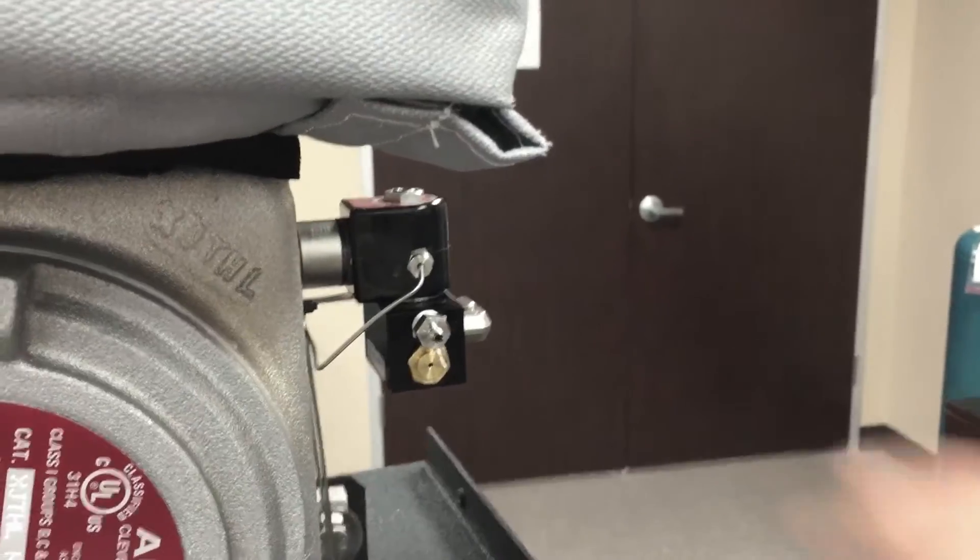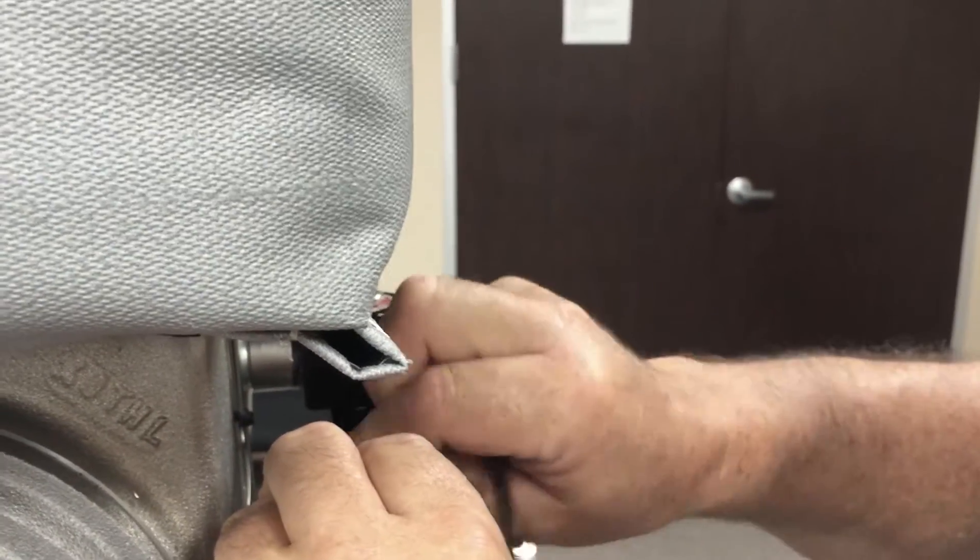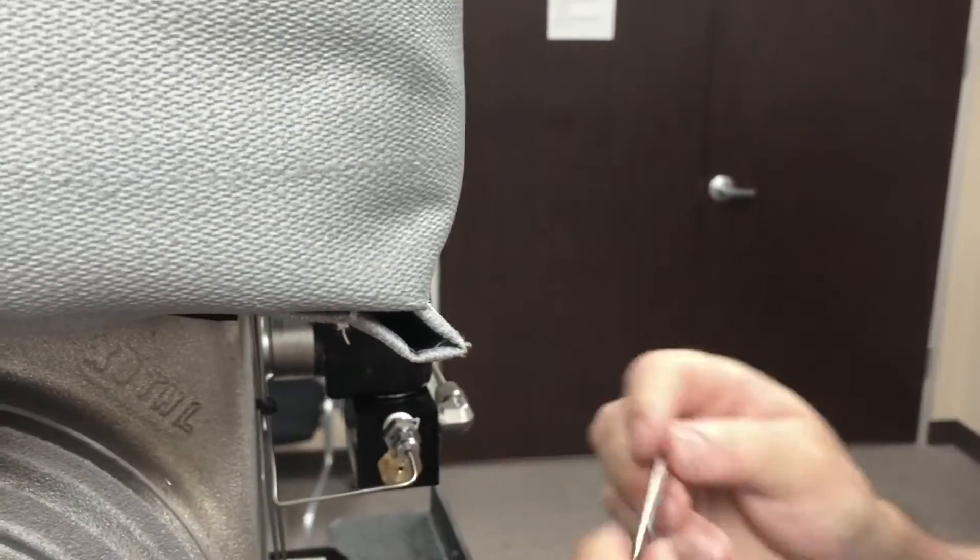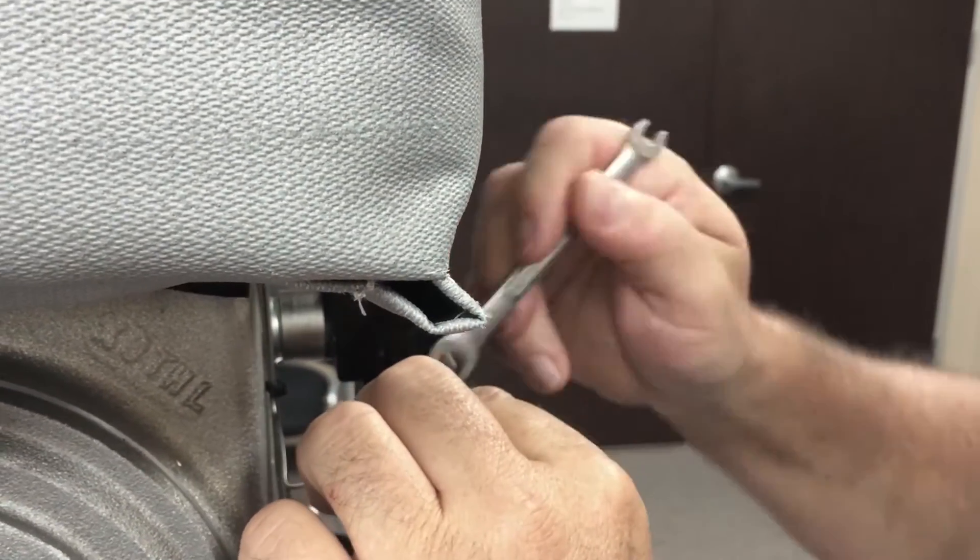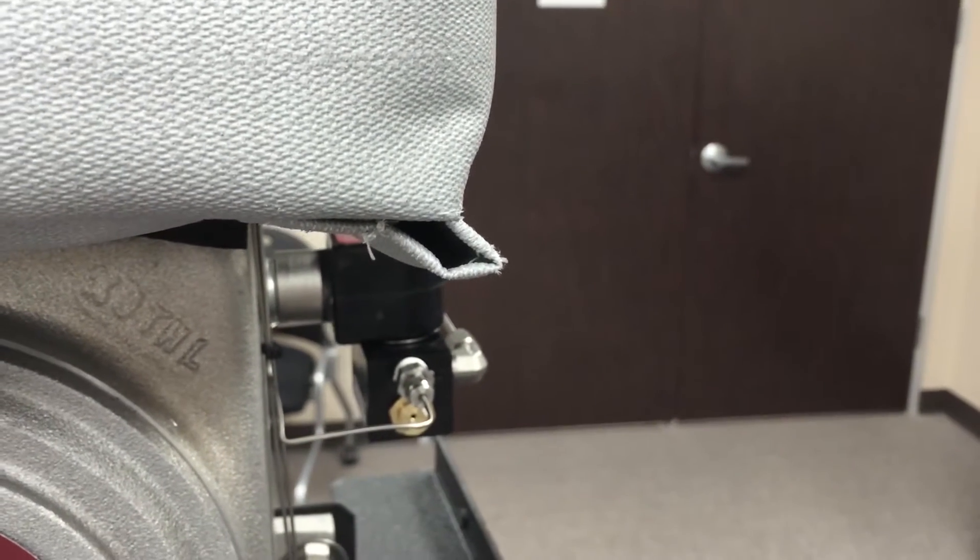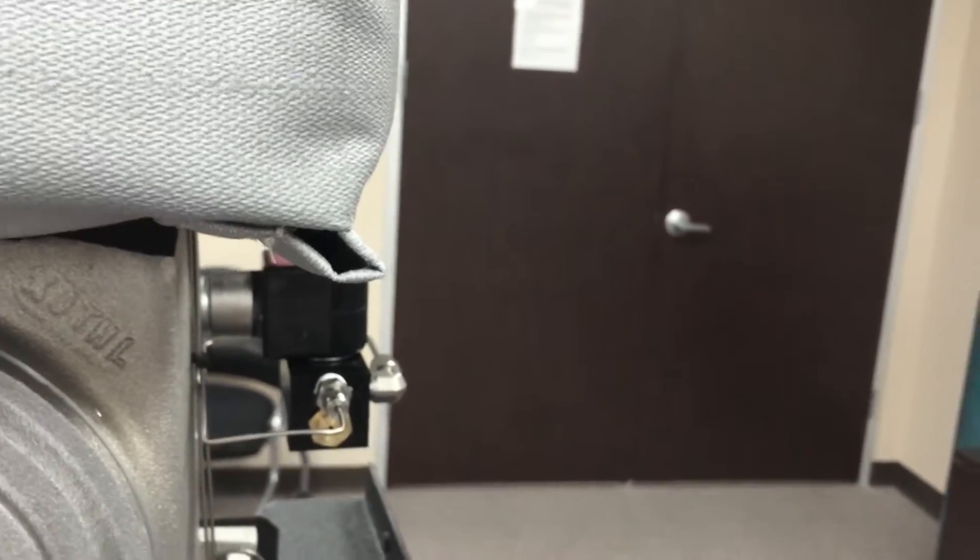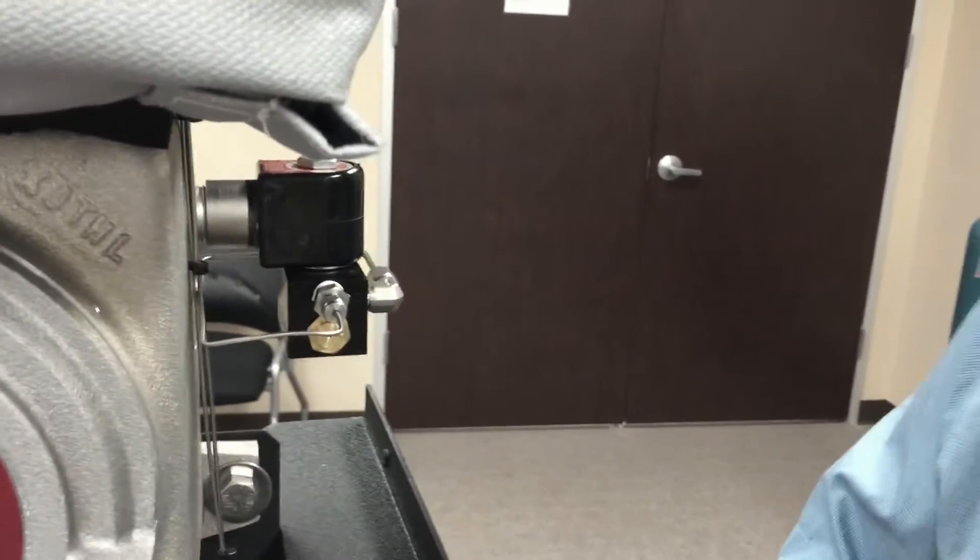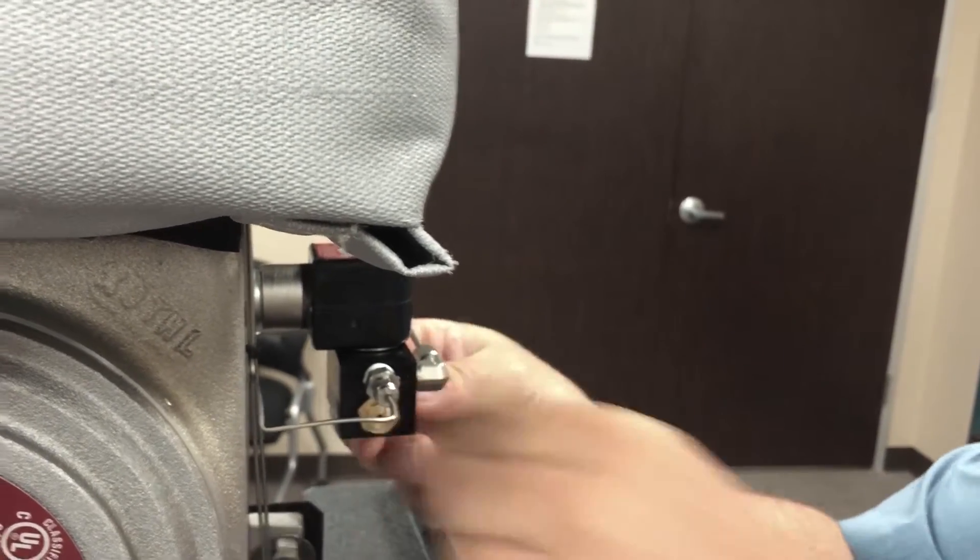Then the last step, we reattach the pneumatic line. After that's been done, we can take the label that's in the kit, peel it off, and add this to the Fabco.